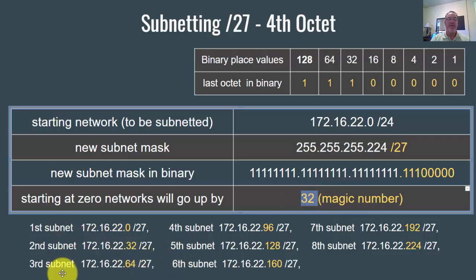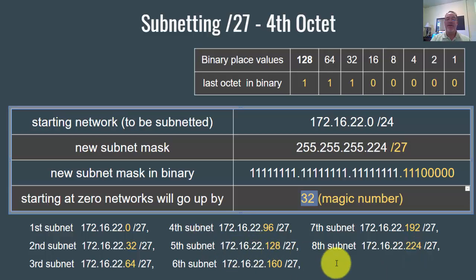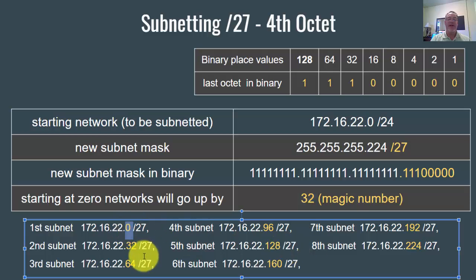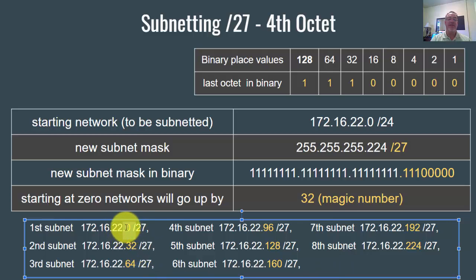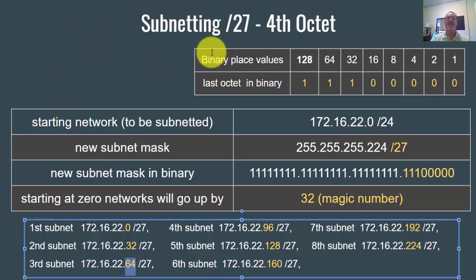So the subnets you've created will go up by 32, giving you eight subnets: zero, 32, 64, 96, 128, 160, 192, and 224. Each is a separate network address. The broadcast address for each is one before the next network — so the zero subnet's broadcast is 31, the 32 subnet's broadcast is 63, and so on. That's subnetting with a slash 27 subnet mask.